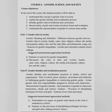Course 6 is Gender, School and Society. Course objective: at the end of the course, the student and teacher will be able to understand the concept of gender roles in society; explain the gender identity and socialization process; identify gender roles in textbooks and curriculum; discuss the safety of girls and women at school, home and workplace; and understand the representation of gender in various mass media.